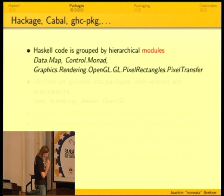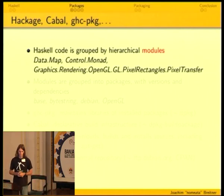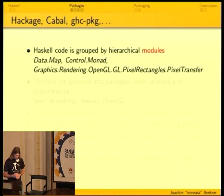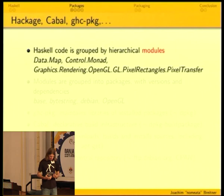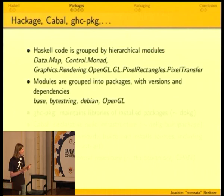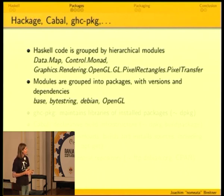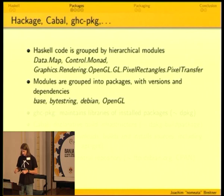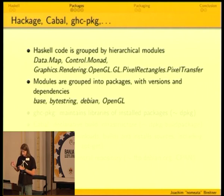Haskell code is organized in a certain way. The smallest unit of organization is Haskell modules. They have names, the names are hierarchically organized, and can be either short or rather long. A bunch of those modules that belong together are distributed as a package. There's a big potential for confusion here — there are Haskell packages as in the package that upstream provides, and then there's a Debian package that we build out of it.